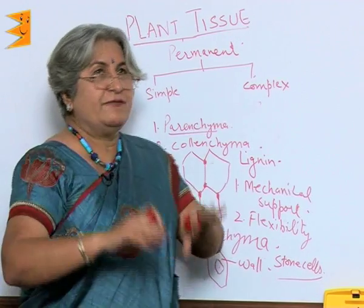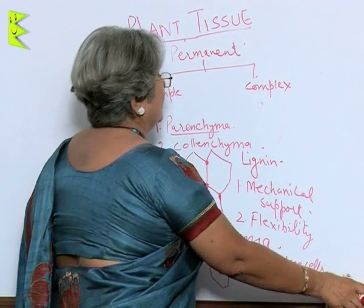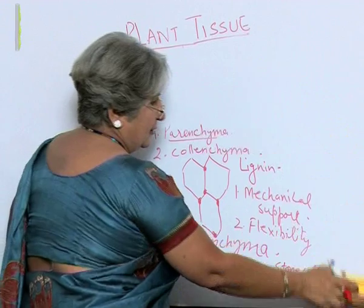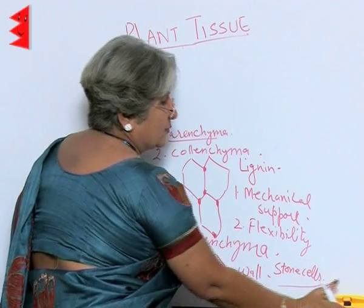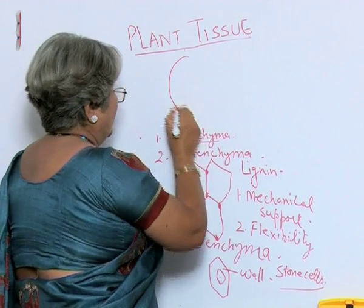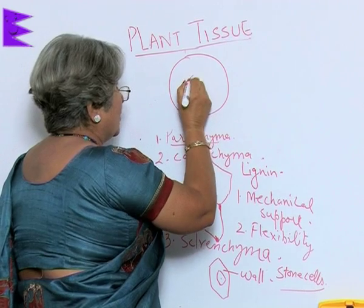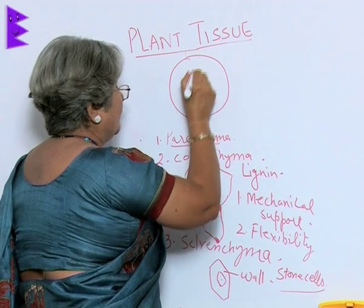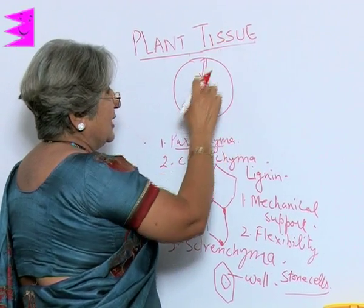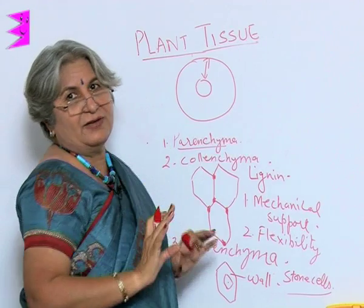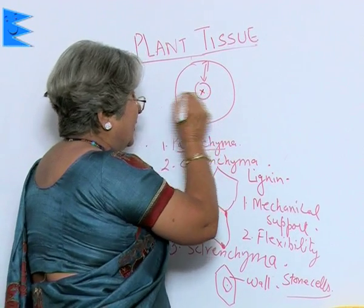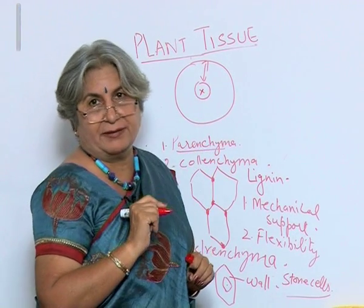If we see this as a round structure in a transverse section, what we are talking about is the tissue in between the outermost layer and the vascular bundle, and of course in the centre the pith also has parenchyma.